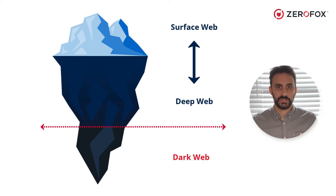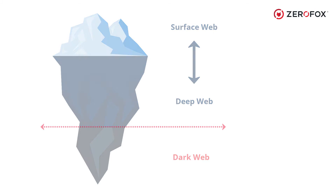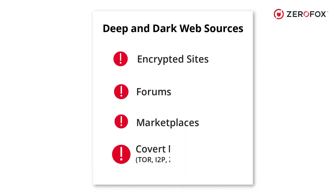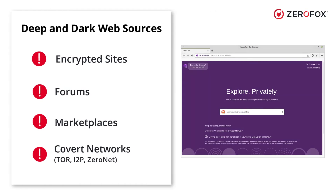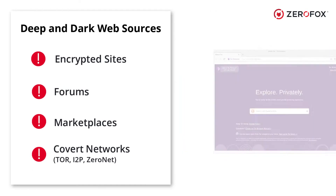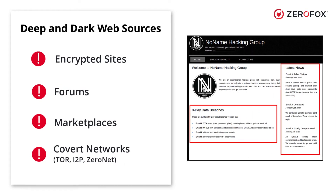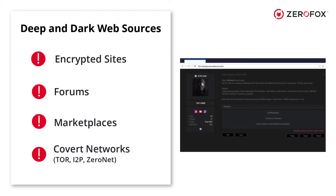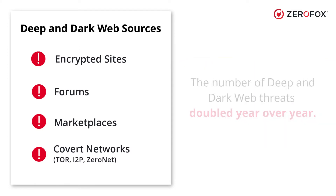Threat actors operate in all of these areas, so it's important to look expansively. The deep and dark web is vast and includes encrypted sites, forums, marketplaces, and covert networks such as Tor, I2P, and ZeroNet. These networks are ever-evolving and require continuous effort and dedicated resources to monitor high-value marketplaces and communication channels.